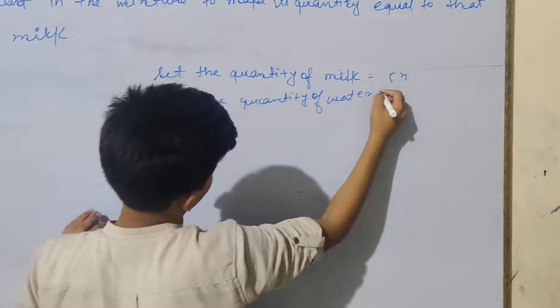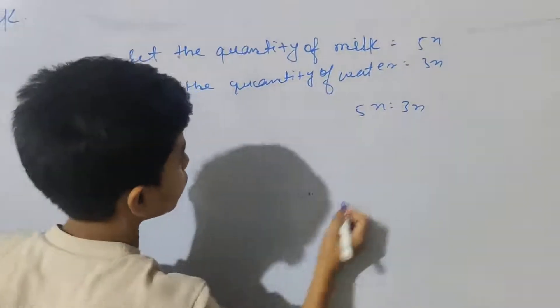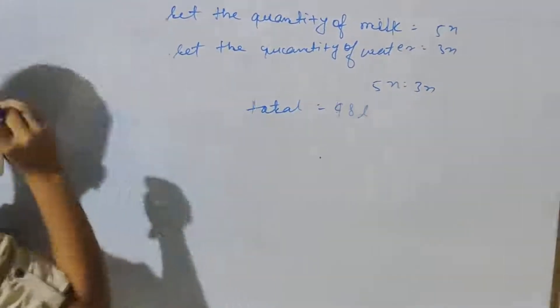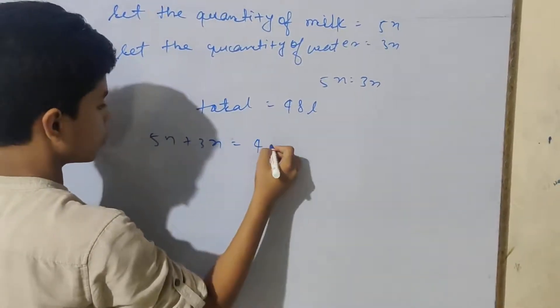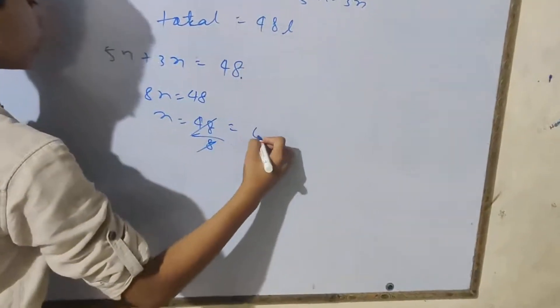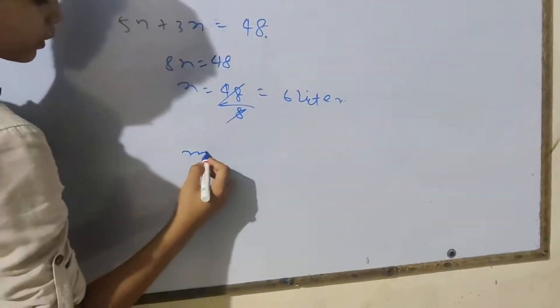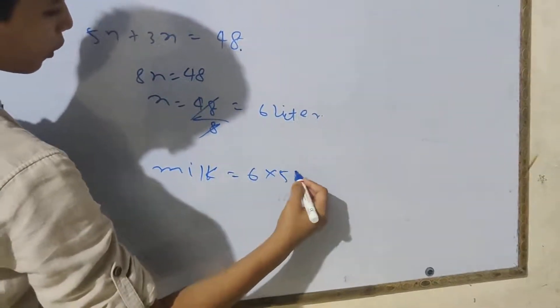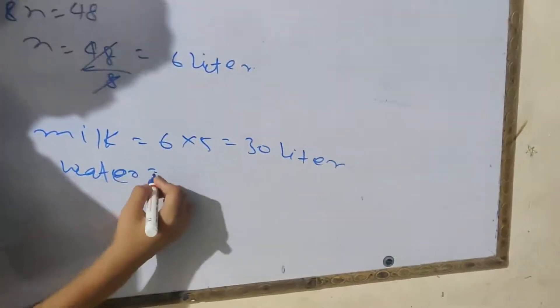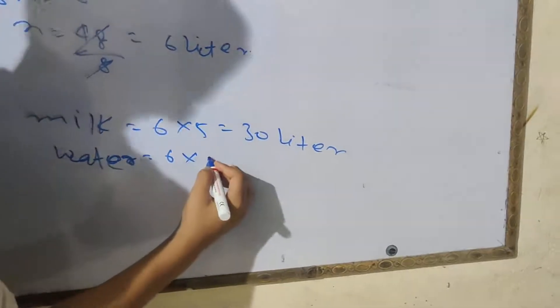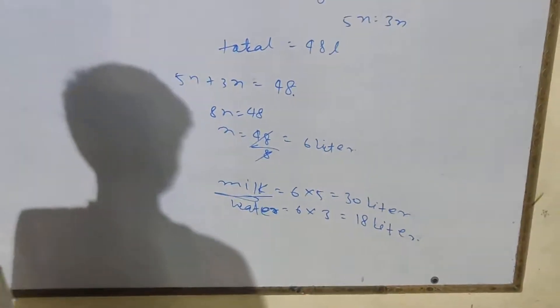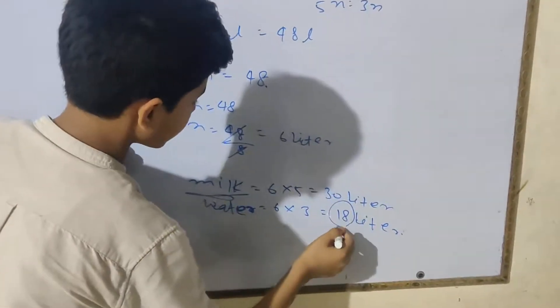Let the quantity of milk equal 5X and let the quantity of water equal 3X. So 5X plus 3X equals the total quantity, which is 48 liters. 8X equals 48, so X equals 48 divided by 8, which equals 6.